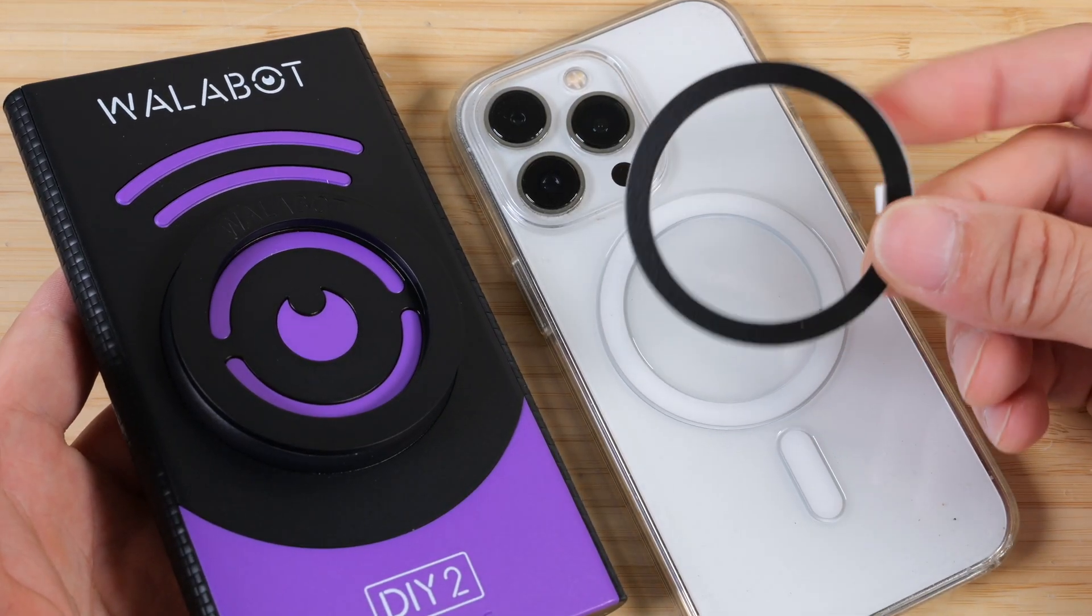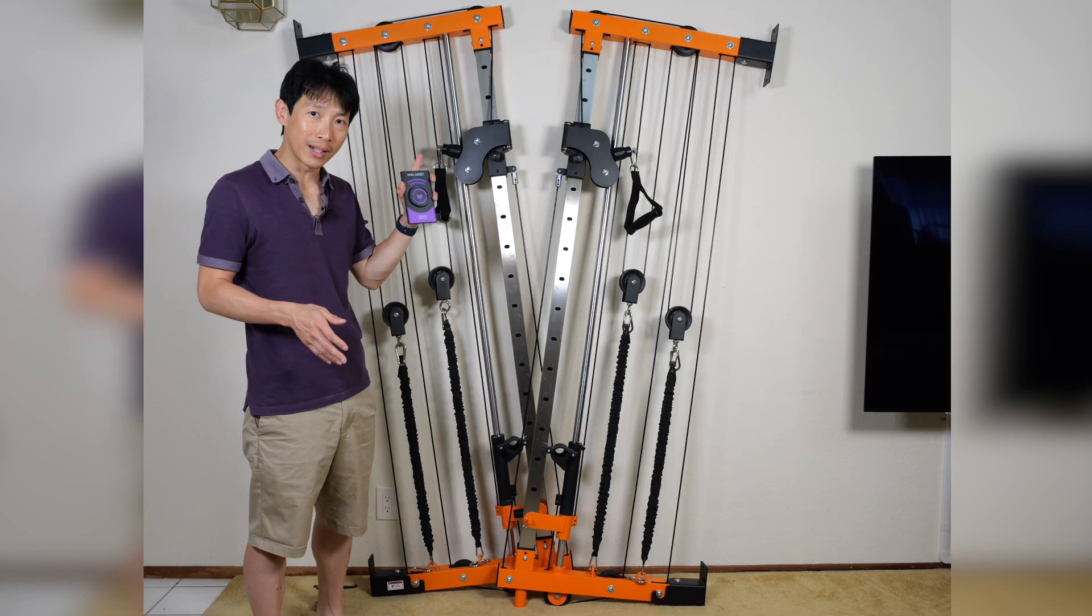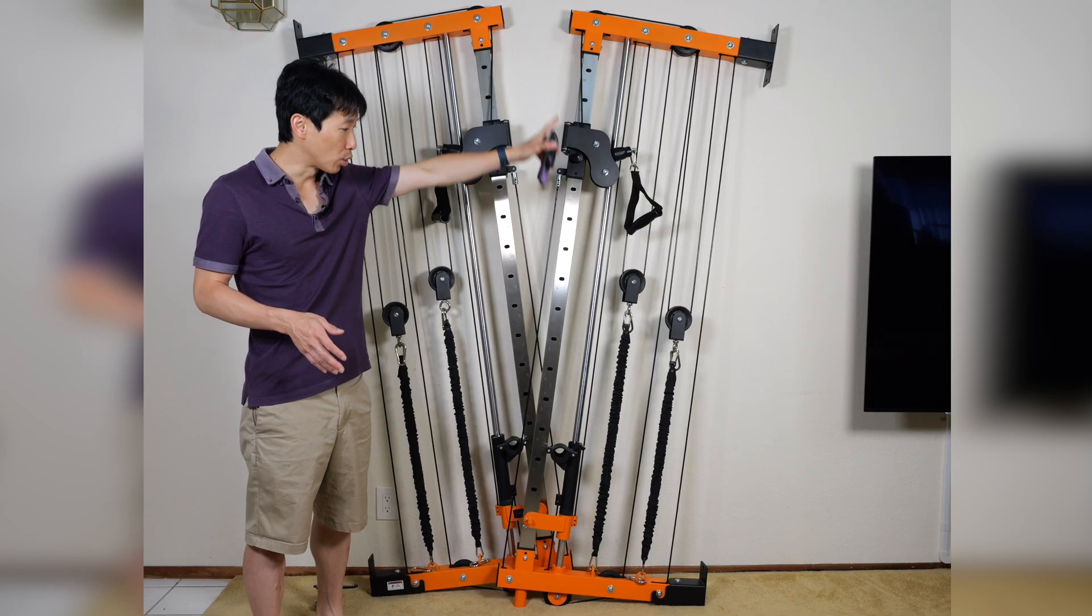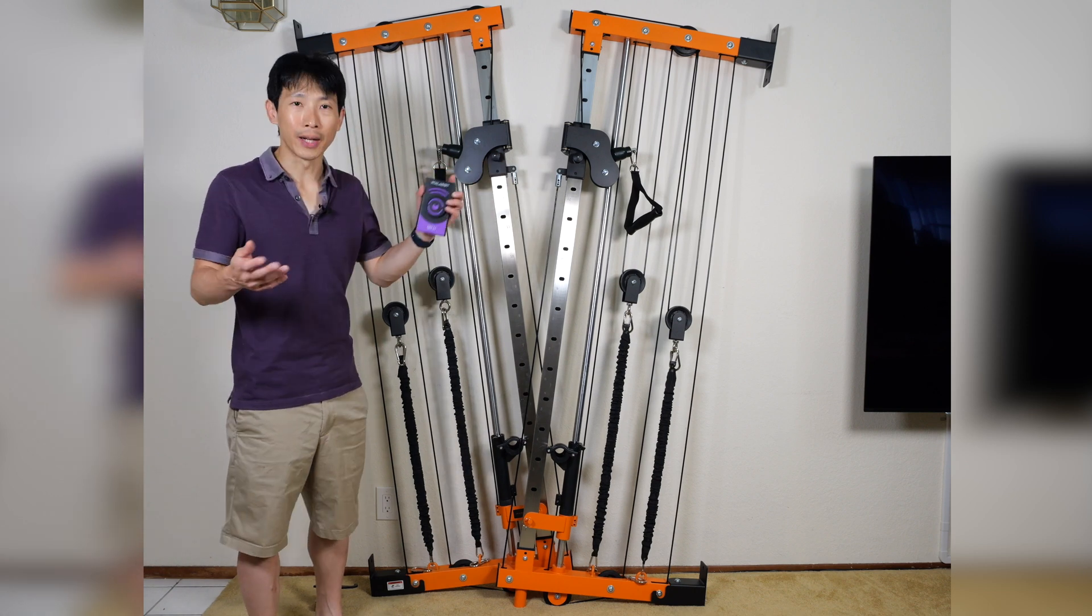I'll be using this Wallabot DIY 2 to find the stud centers and to avoid wires in the wall. Let's find the studs on this. I need the two studs to be 48 inches apart, so there's going to be four of them. Let's get started.